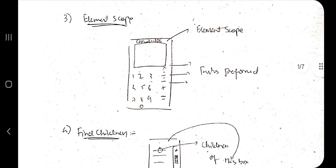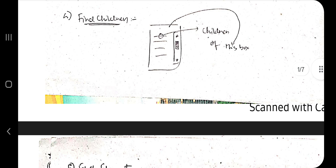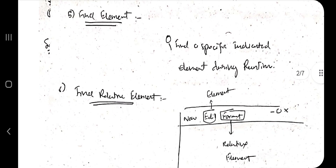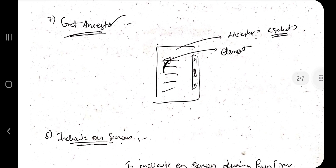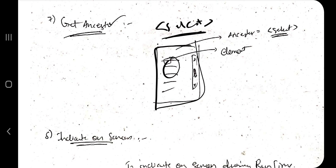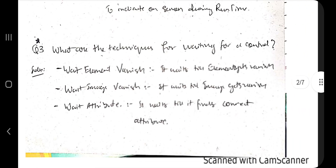Element Exist returns true if that element exists, else false. Element Scope means you restrict all activities to a specific application, like the calculator, without performing tasks elsewhere. Finding Children: if you have a list inside a box, the children are the list elements. Find Element locates a specific element at runtime. Find Relative Element finds elements near a given element. Get Ancestor: if you select a child, it returns its parent — similar to the select tag in web. Indicate on Screen is used to indicate an element on screen during runtime.